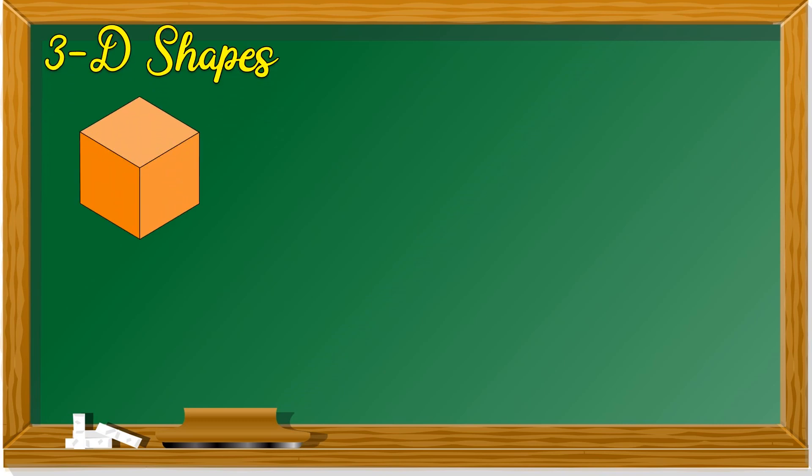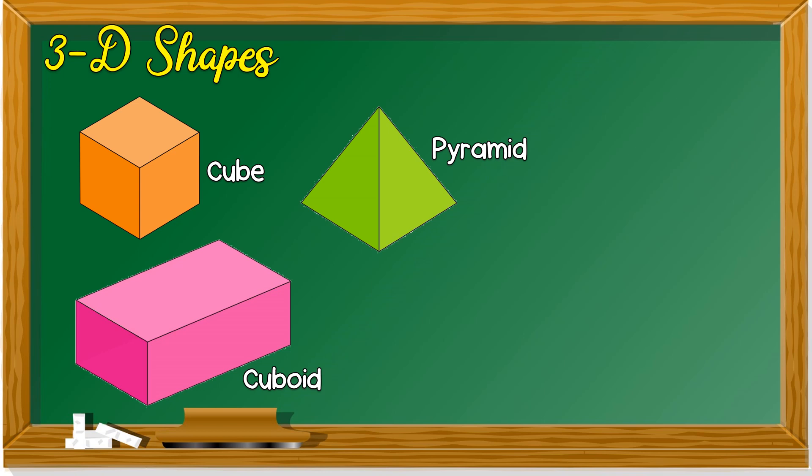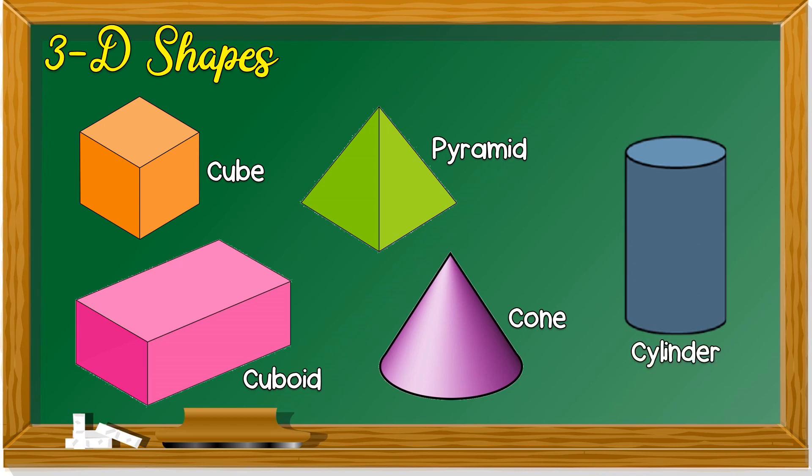I hope you have understood the 3D shapes that we have learned today. We have learned this is a cube. This is a cuboid. This is a pyramid. This one, a cone. And this one is a cylinder. You need to remember flat faces, vertex, bucunya, and straight edges, tepinya.